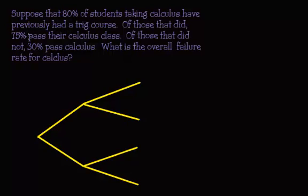Suppose that 80% of students taking calculus have previously had a trig course. Of those that did, 75% passed their calculus class. Of those that did not, 30% passed calculus. What is the overall failure rate for calculus? Oops, spelled calculus wrong.